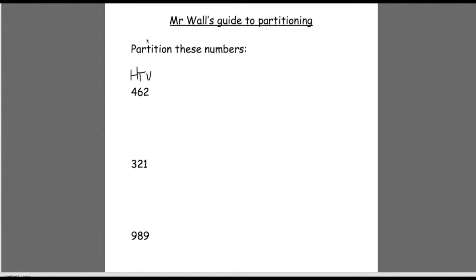So when you're asked to partition a number, effectively all you've got to do is split it up into its parts. And it looks a little bit like this. 462 equals 4 hundreds plus 6 tens plus 2 units.